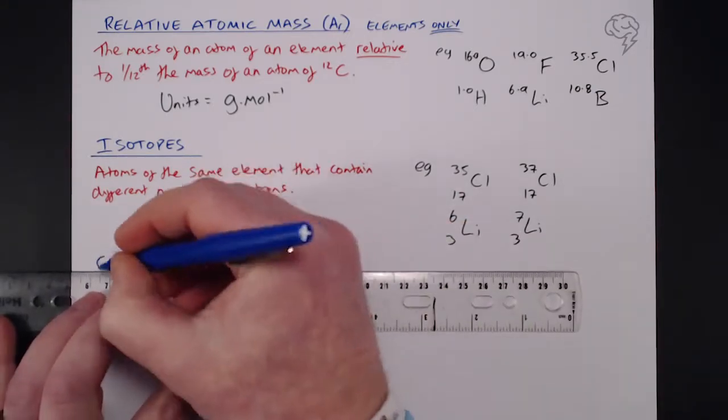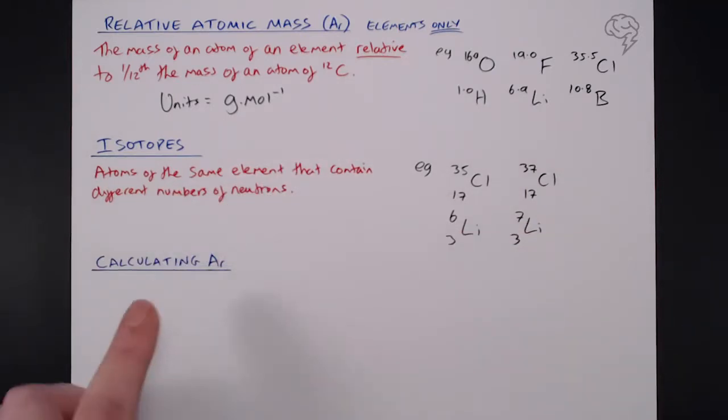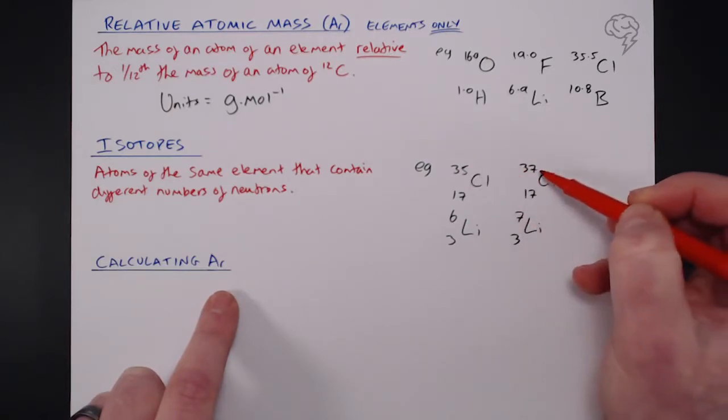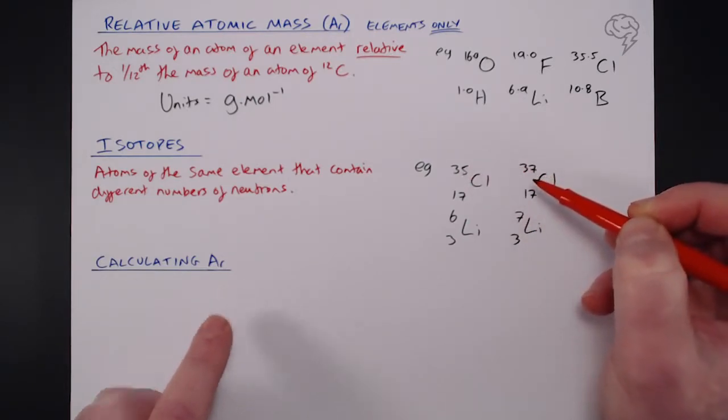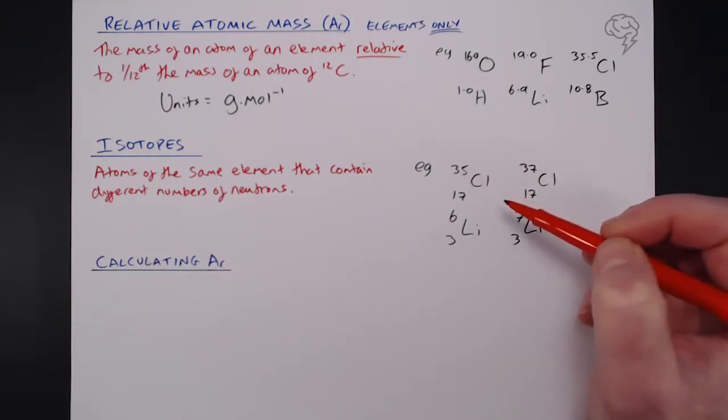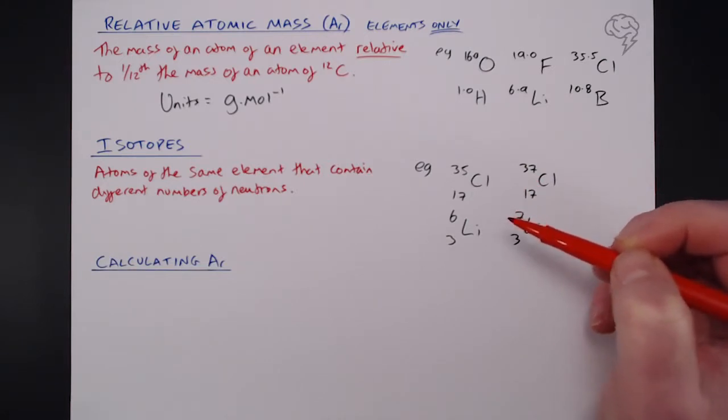Now, to calculate the relative atomic mass of an element, you need to take into account two things. Number one, the masses of the different isotopes. Number two, their relative abundances.